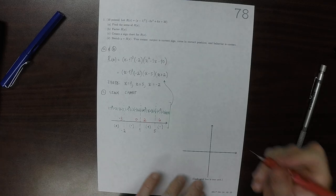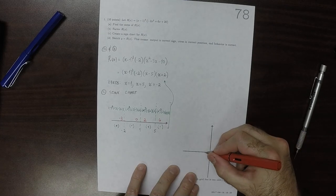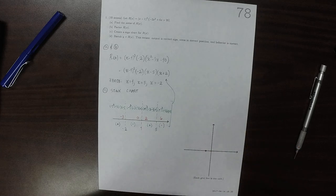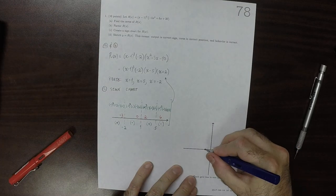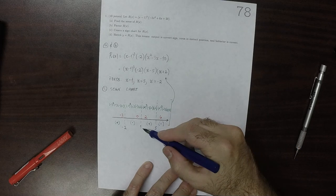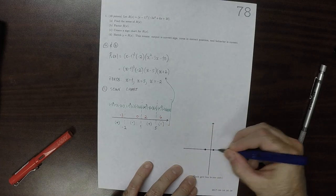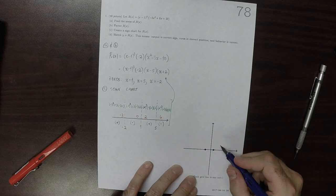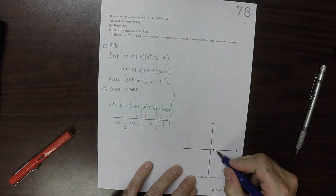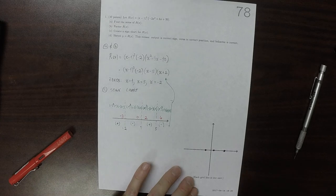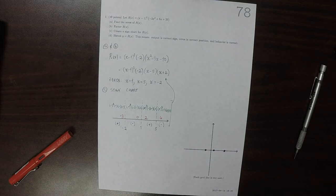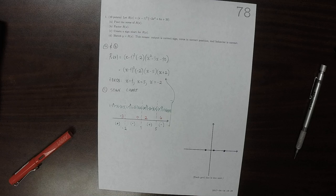So now we can plot these zeros, so negative 2, let's use a darker, negative 2, positive 1, and positive 5, 1, 2, 3, 4, 5, so we've got those three zeros.